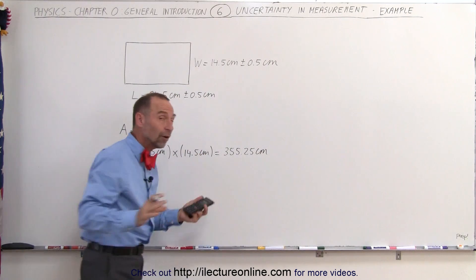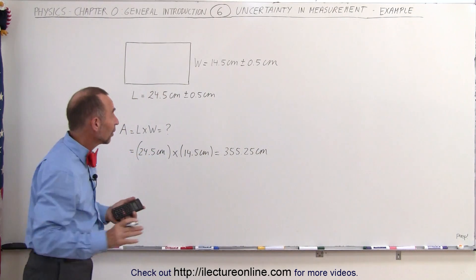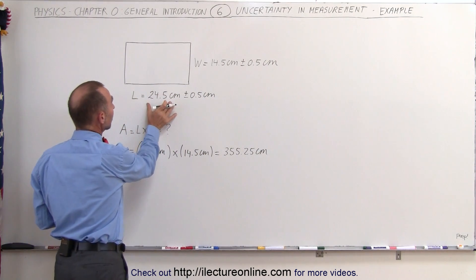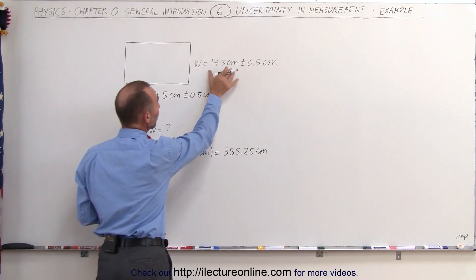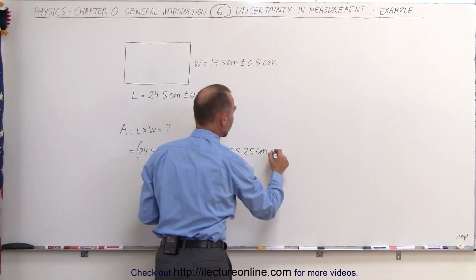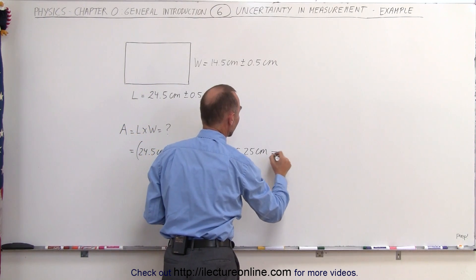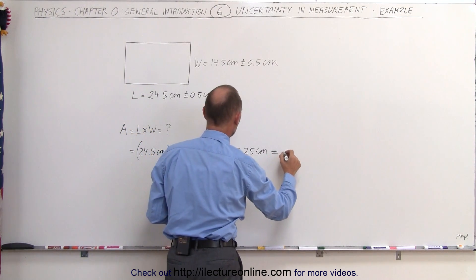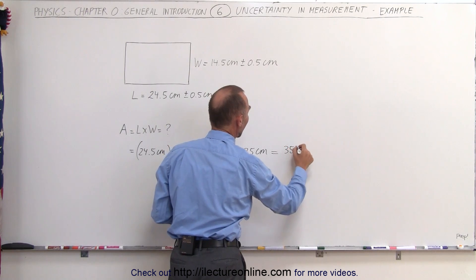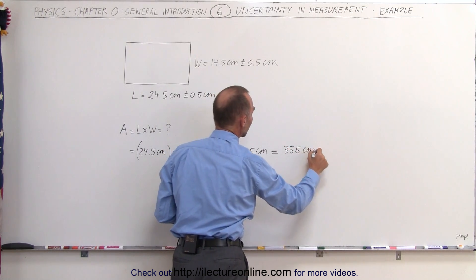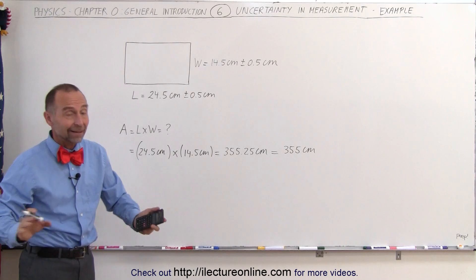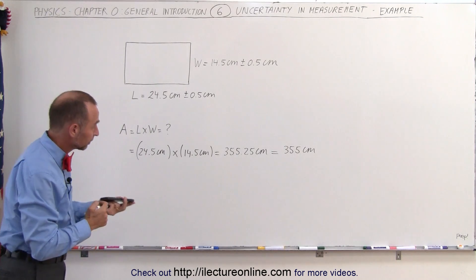Now, first of all, since we only had three significant figures in the length and three significant figures in the width, we should say this is really equal to 355 centimeters squared, and drop the 0.25, because those digits are definitely not significant.